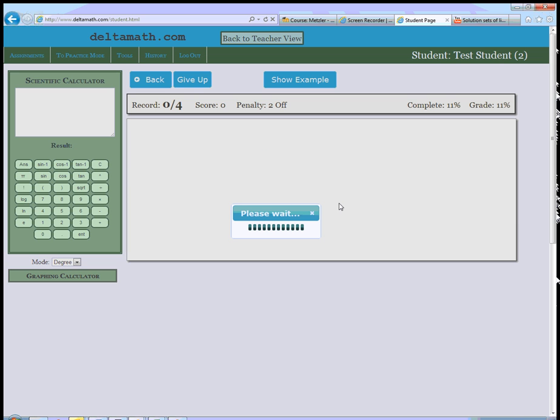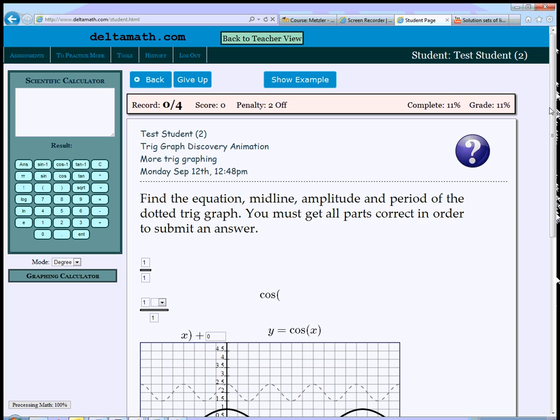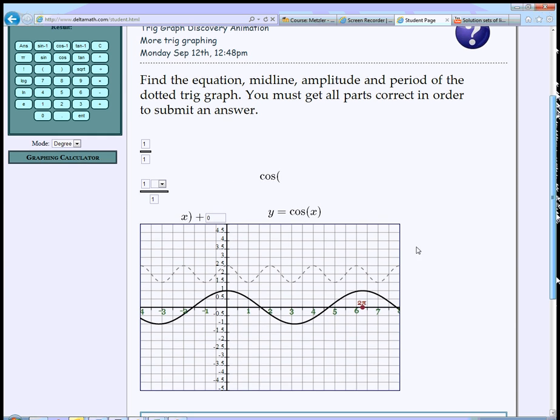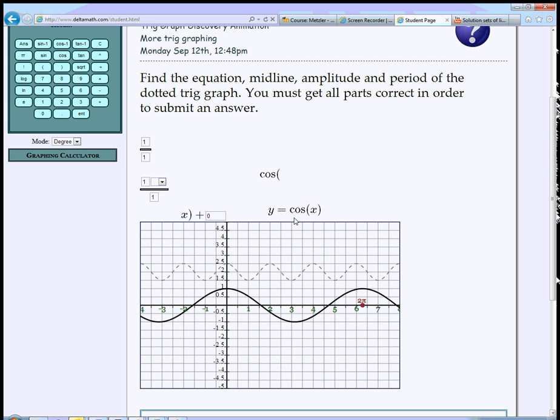And then the last one, trig graph discovery animation. Here it's given a graph. So what they have is y equals cosine x as your reference. And then the dotted one is a modified one. And you're supposed to figure out what the parameters are. Now it's a little weird how it renders. I think he's still working on this.